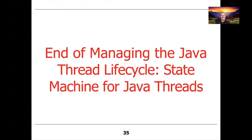That's the end of the discussion of the state machine for Java threads. Through that very detailed discussion, you can see there are a lot of moving parts to a thread. Therefore, as we'll talk about later in the analysis part of this lesson, you have to use threads judiciously. Don't just spawn them willy-nilly to do very short-running operations — spawn them when there's a need to do something that's going to run for a while.